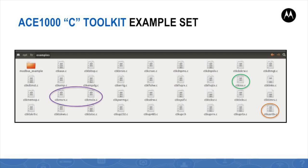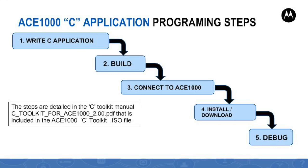The CTK-MS-RX.C example file demonstrates the toolkit APIs to read and write values from or to the ACE1000 user tables in the database. The ACE1000 C application key programming steps are: design and write a C code application using NCC, standard Linux APIs, and ACE1000 toolkit APIs; build the application executable; connect to a running ACE1000 target unit with the proper username and password; download the application to the connected unit; and debug the application to overcome runtime faults. These steps are detailed in the C toolkit manual included in the toolkit archive.iso file provided by Motorola.